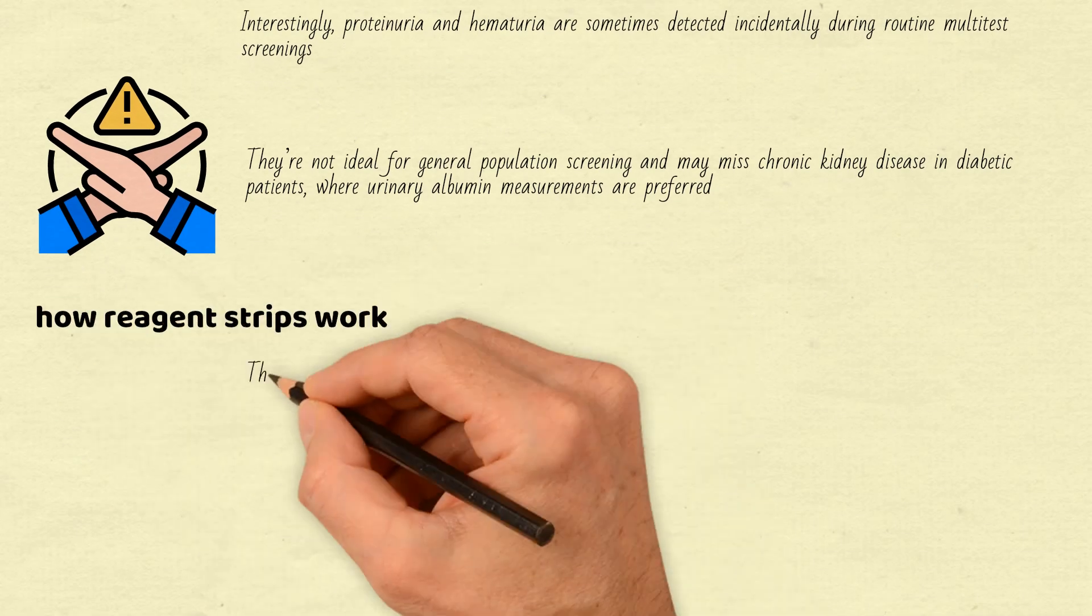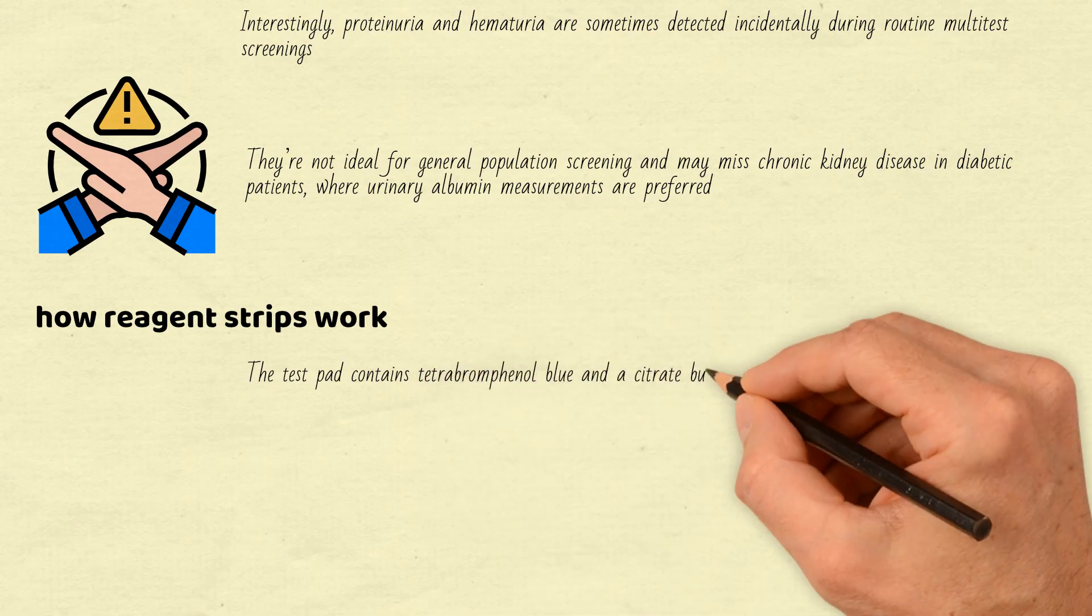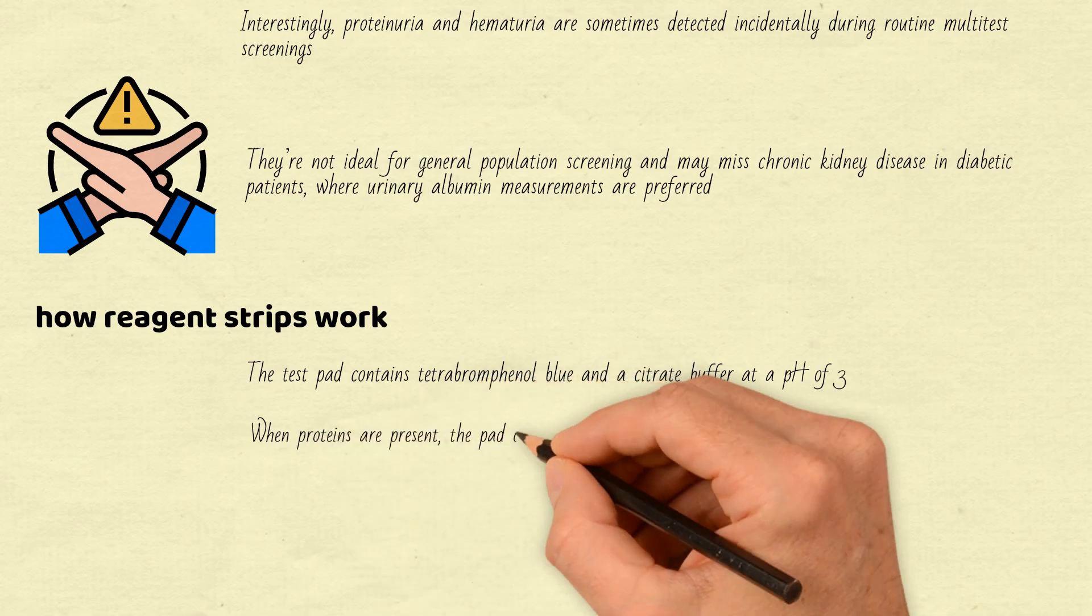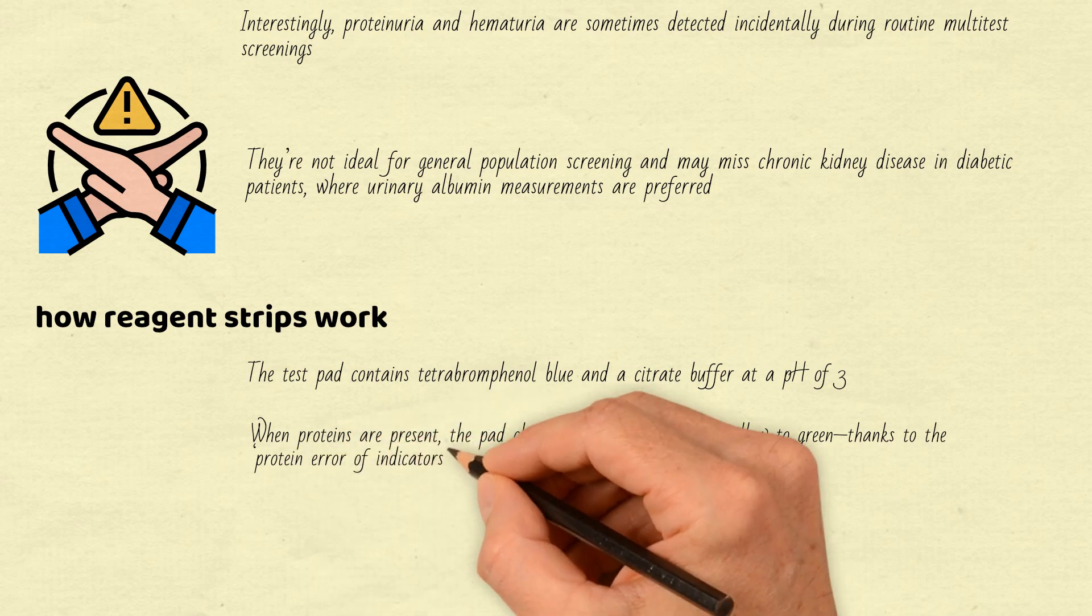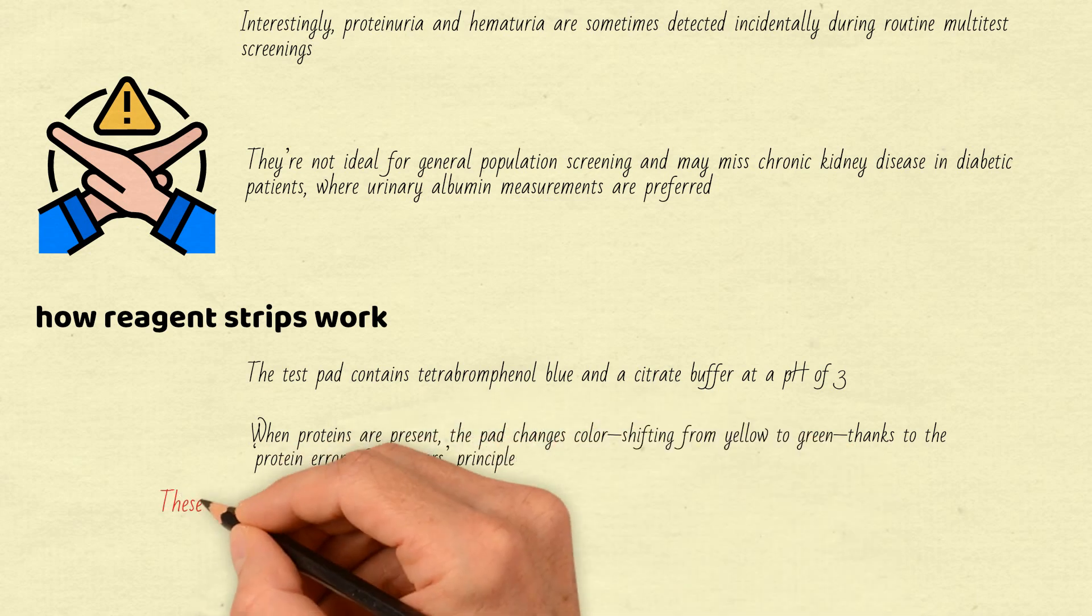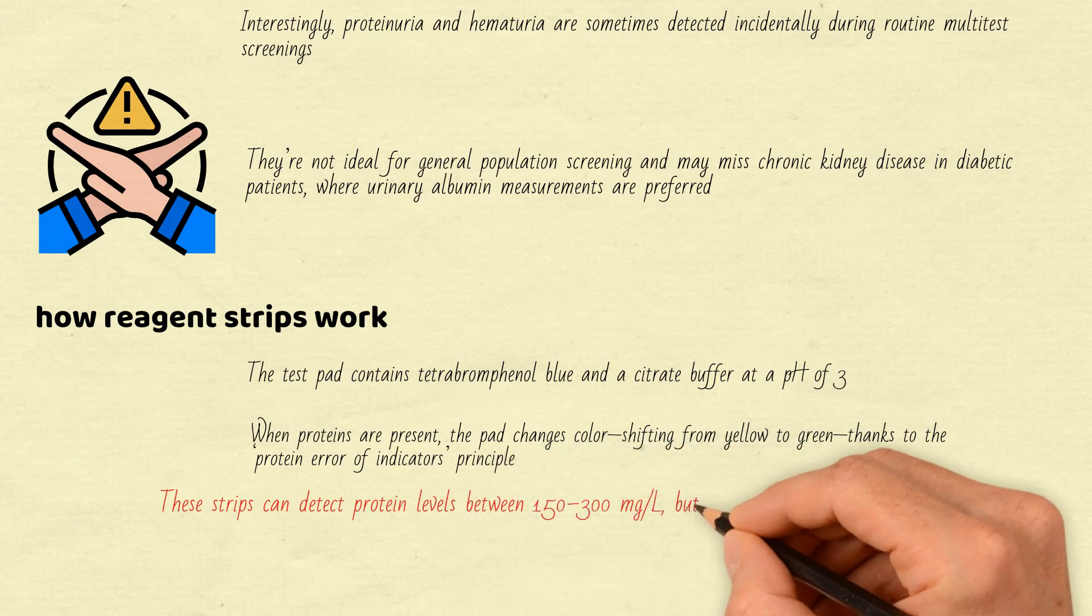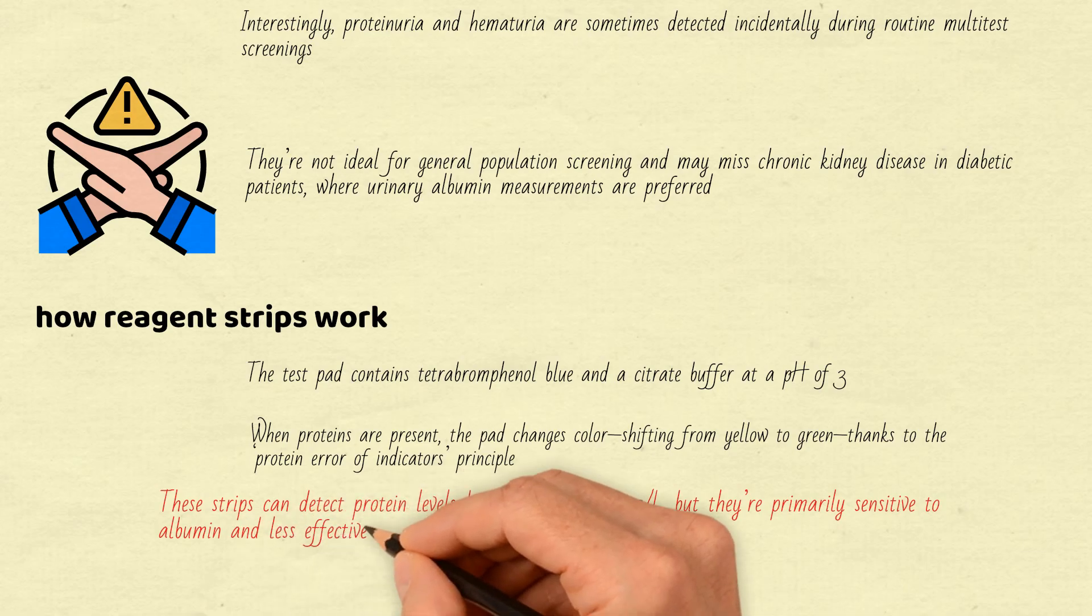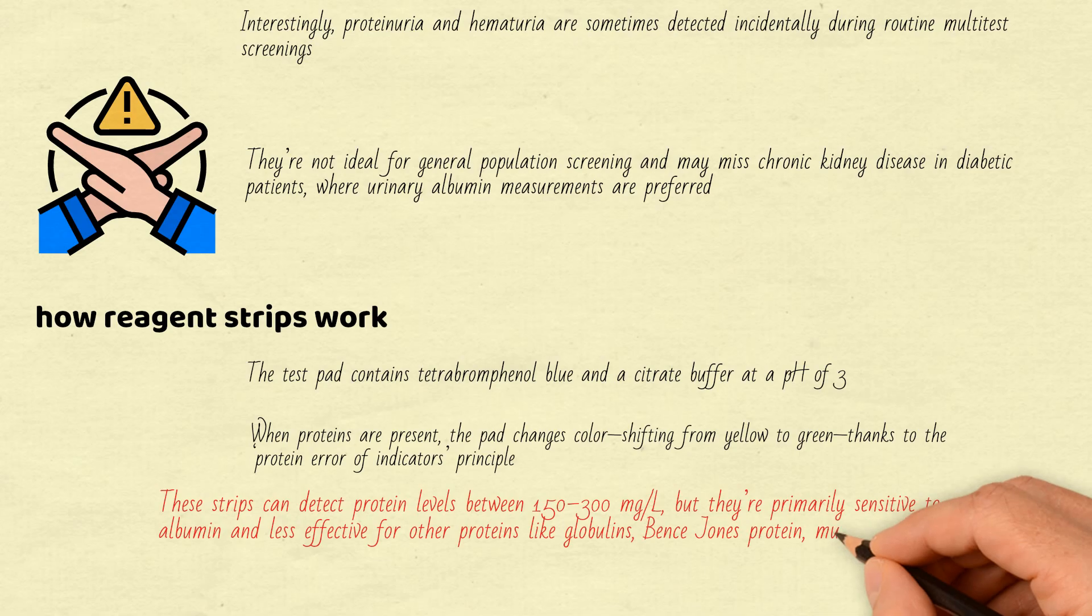Here's how reagent strips work: the test pad contains tetrabromphenol blue and a citrate buffer at a pH of 3. When proteins are present, the pad changes color, shifting from yellow to green, thanks to the protein error of indicators principle. These strips can detect protein levels between 150 to 300 mg per liter, but they're primarily sensitive to albumin and less effective for other proteins like globulins, Benz-Jones protein, mucoproteins, or hemoglobin.